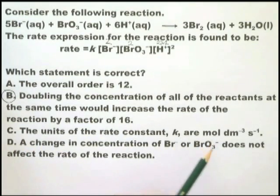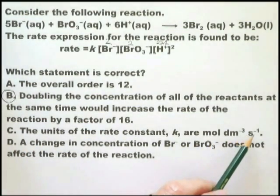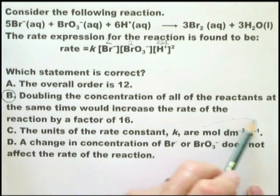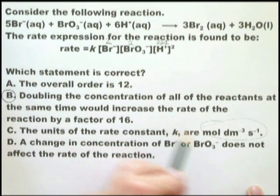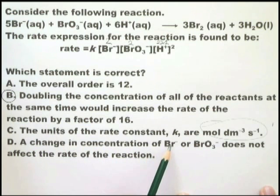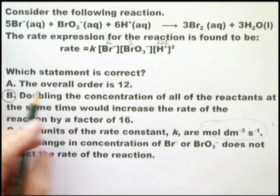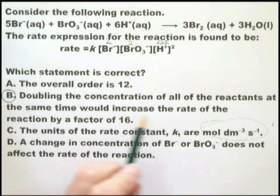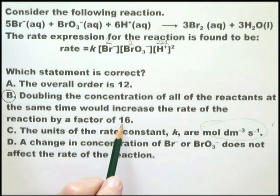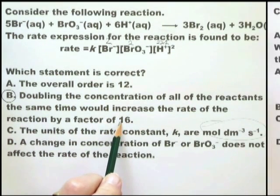Let's confirm the others are wrong. The units of the rate constant, K, are mole per decimeter cubed per second. No, that's not right, because this is the units for a second-order rate constant. The change in concentration of bromide ion or bromate ion does not affect the rate of reaction. Obviously, that's wrong. The change in concentration of these two ions does affect the rate of the reaction. So the answer is B. Doubling the concentration of all the reactants at the same time would increase the rate of the reaction by a factor of 16. That is the correct one.